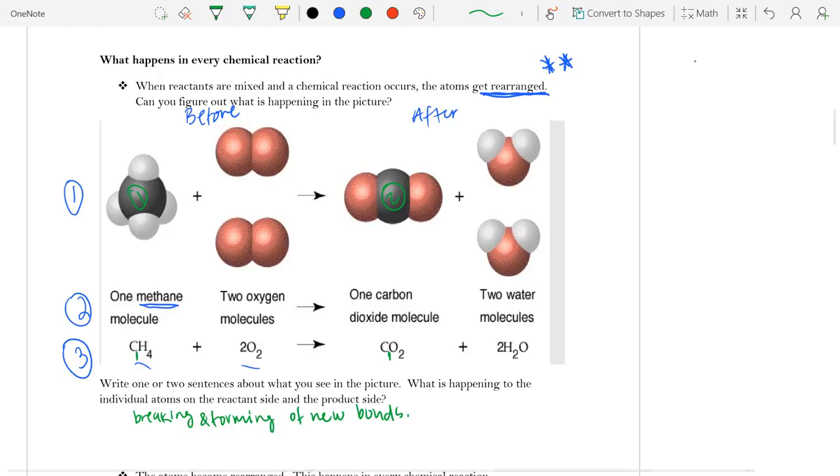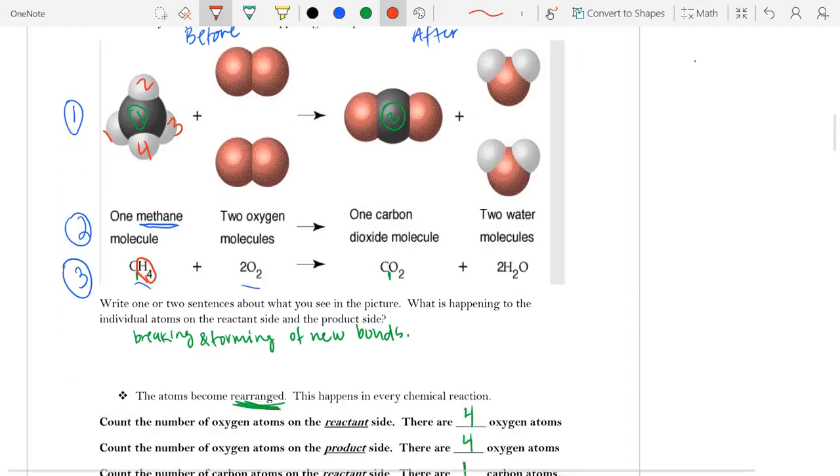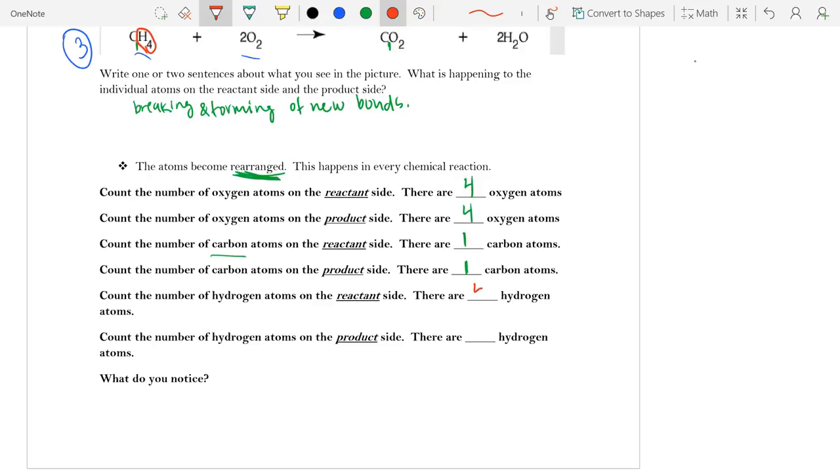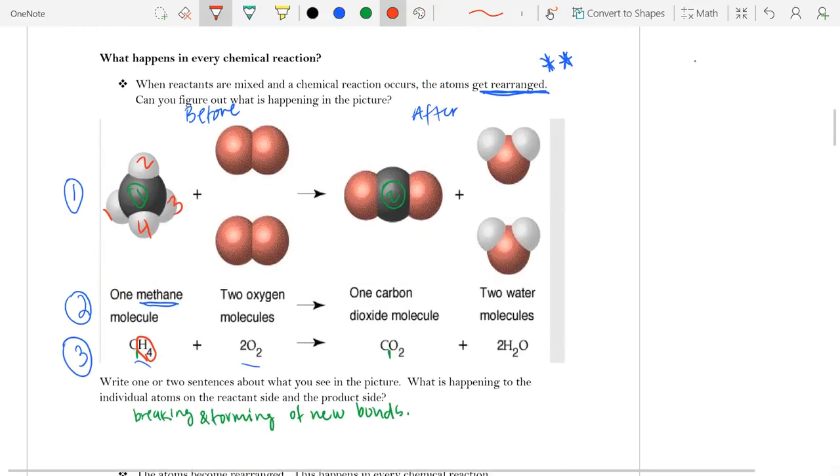And then last, but certainly not least, is the hydrogen atoms. Now the hydrogen atoms are the white circles, and so we can count them, we're going to make a different color, we can say one, two, three, four.